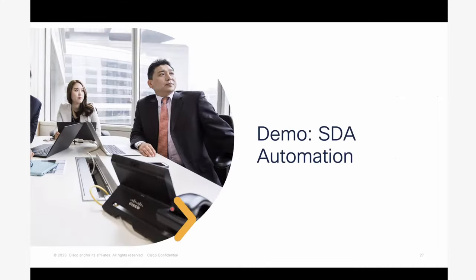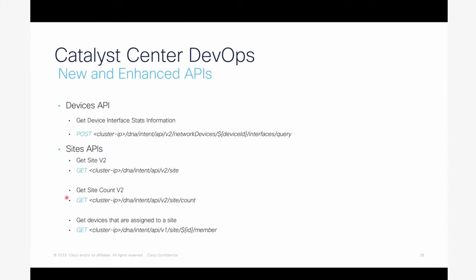Moving on to the last topic — DevOps. The Catalyst Center user interface lets you access API documentation under the Developer Toolkit, showing you the request method, URL, query parameters, responses, and ways to preview or test requests. On each release, APIs are added and enhanced to match capabilities within Catalyst Center. This is not a comprehensive list — check the 2.3.7 release notes for the full list of new and enhanced APIs.